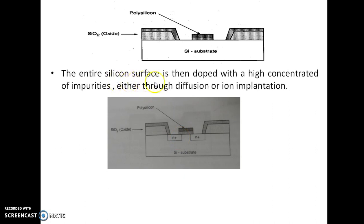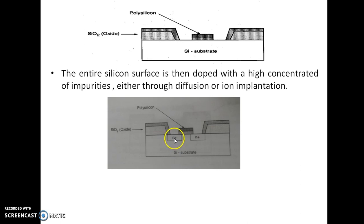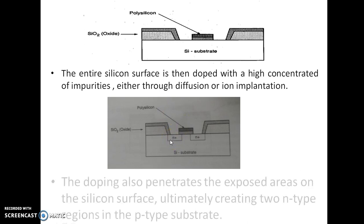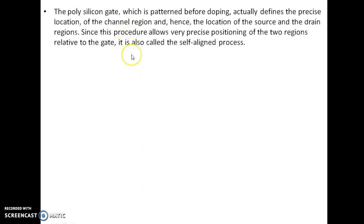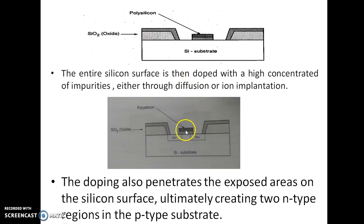The entire silicon surface is then doped with a highly concentrated impurity either through diffusion or ion implantation. By using pentavalent impurity we get n+, and by using trivalent impurity we get p+. The doping penetrates the exposed areas on the silicon surface, ultimately creating two n-type regions in the p-type substrate, forming the source and drain, with the polysilicon gate in between.